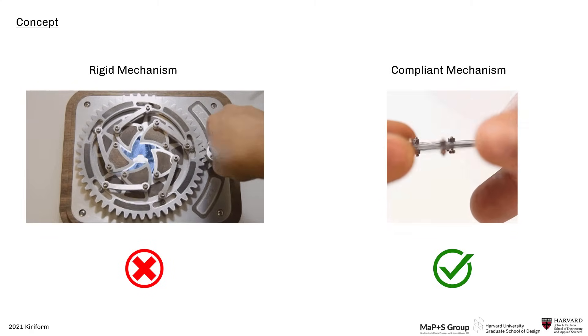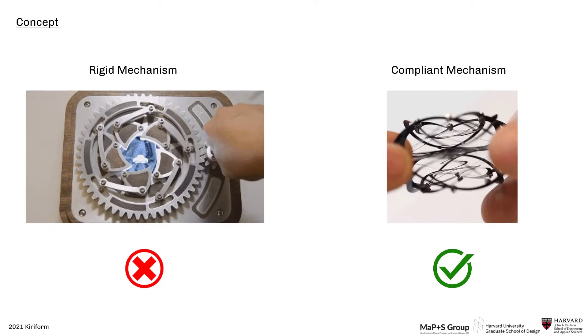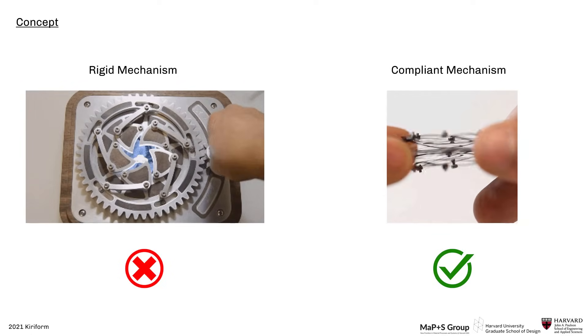Rigid mechanisms require a lot of parts, are complex to assemble and prone to wear and failure. Compliant mechanisms, on the other hand, are lightweight, low cost and easy to assemble.